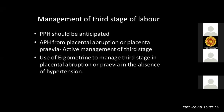Management of the third stage of labor in antepartum hemorrhage is very important. You should anticipate postpartum hemorrhage and perform active management of the third stage for placental abruption or placenta previa. Active management has three components: administration of uterotonics — oxytocin intramuscular or intravenous — after birth of the baby, early cord clamping, and controlled cord traction. Ergometrine should be used to manage the third stage in placental abruption or previa in the absence of hypertension.